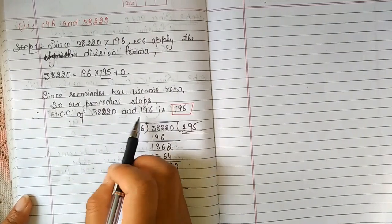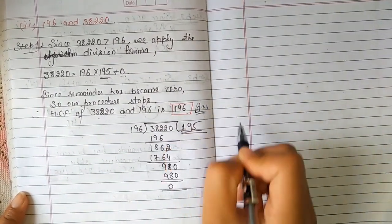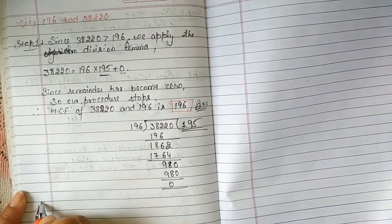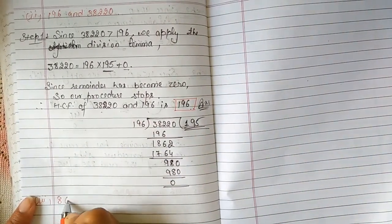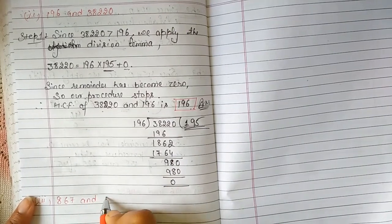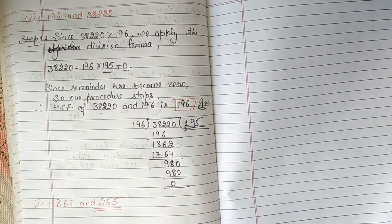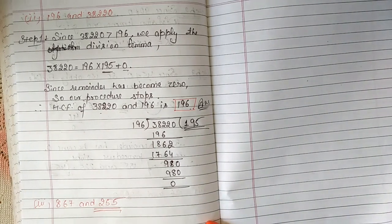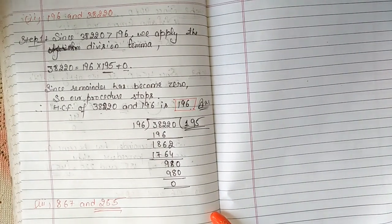Now the last question is question number three: you have to find HCF of 867 and 255. As we have done the procedure to find HCF, we can solve it or give you homework. You can solve it in the comments. If you don't know, then tell us.